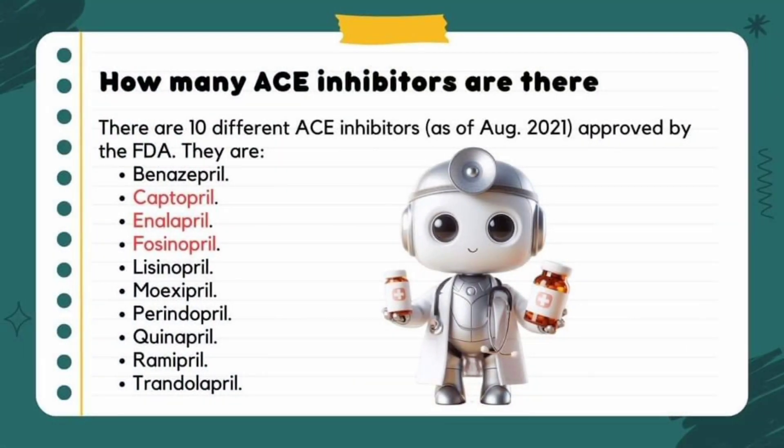There are 10 different ACE inhibitor drugs approved by the FDA. The most common ones include captopril, fosinopril, enalapril, lisinopril, and ramipril.